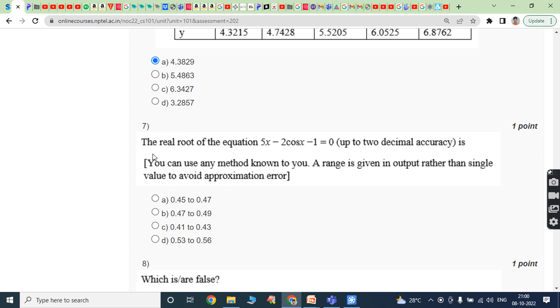Seventh question: The real root of the equation 5x minus 2 cos x minus 1 equals 0, up to 2 decimal accuracy, is answer option D, 0.56.